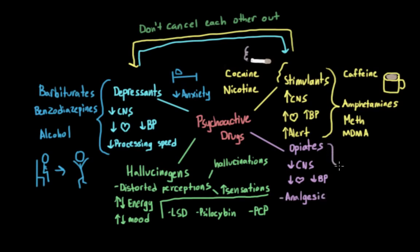Some opiates you might have heard of include morphine, codeine, and heroin, but the category also includes substances like oxycodone and Vicodin.